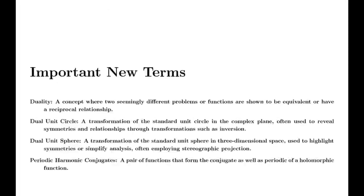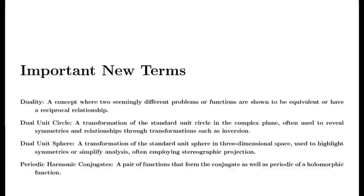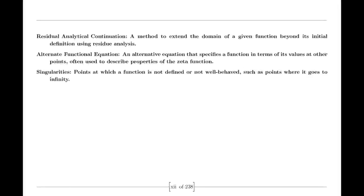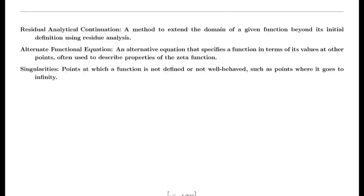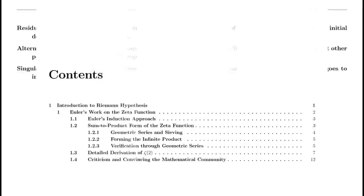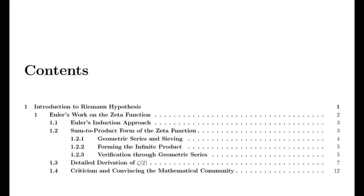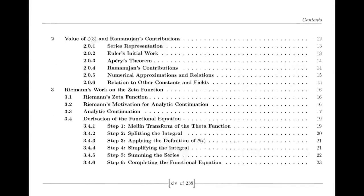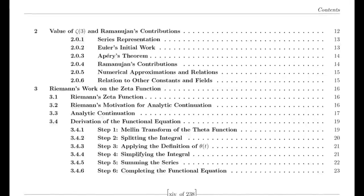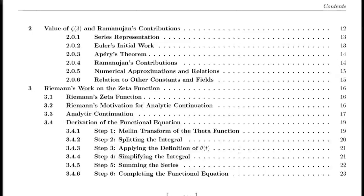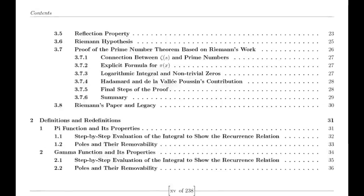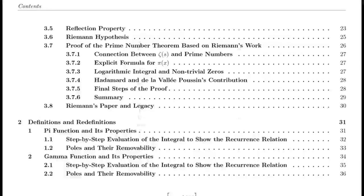Moving to the 19th century, we encounter Bernhard Riemann, who expanded our understanding of complex functions. Riemann introduced the concept of analytic continuation, which allowed for the extension of functions beyond their initial domains. He extended the Riemann Zeta function — initially defined only for complex numbers with real parts greater than 1 — to the entire complex plane except for S equals 1, where it has a simple pole.